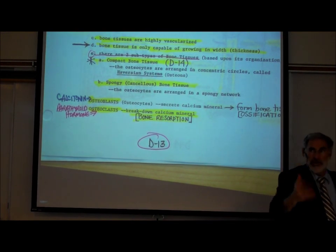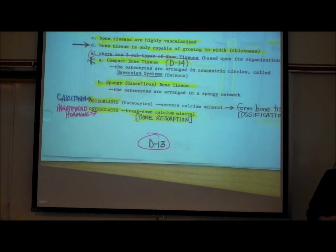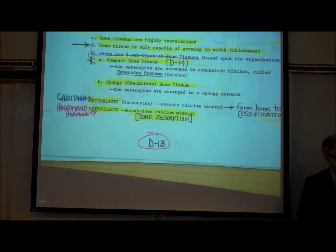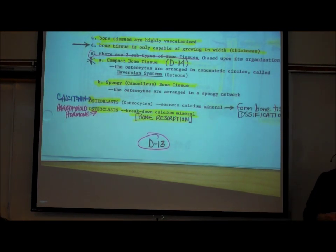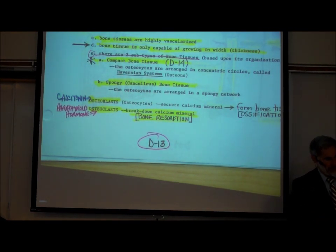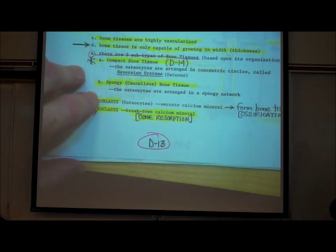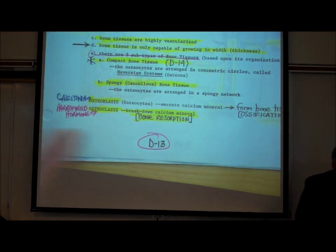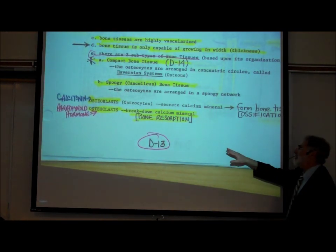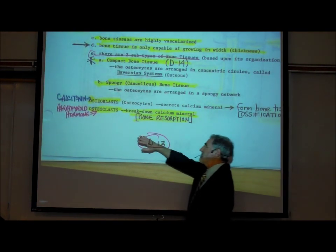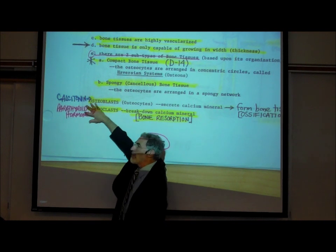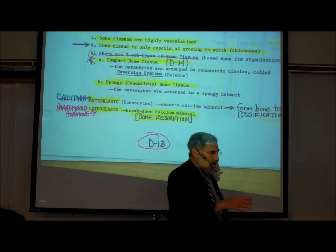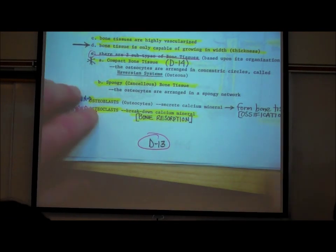Osteoporosis is actually a more serious consequence of menopause than even the shrinking of the uterus. We will have more to say about these processes and the hormones that affect bone cells when we get to endocrinology.